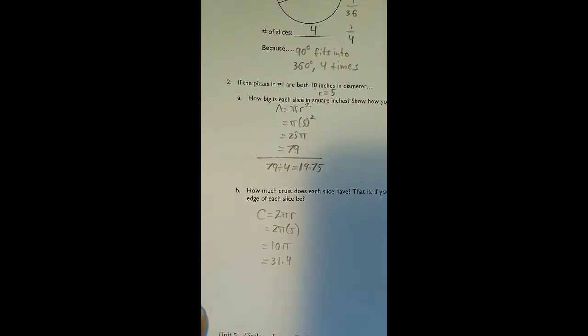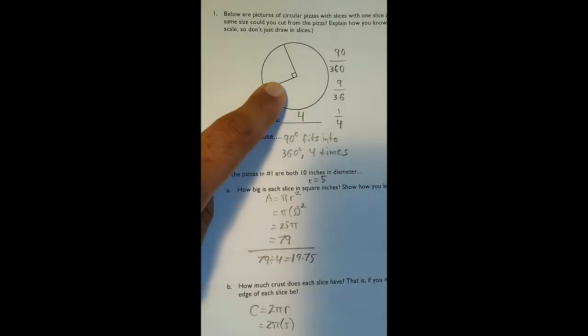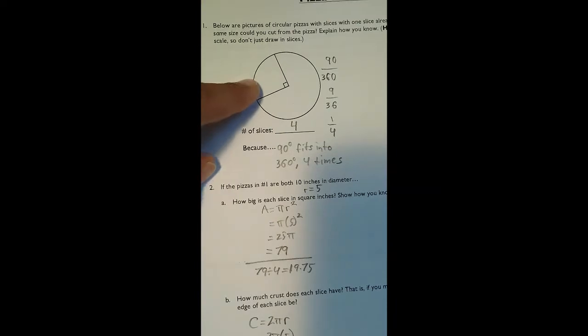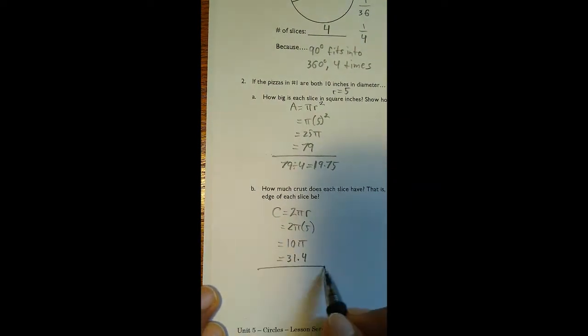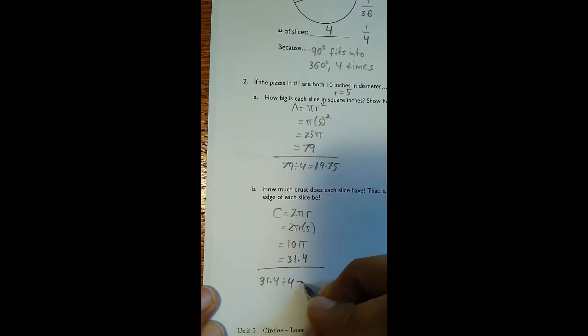Now, what do we determine? We already know that for the first pizza, we're going to have a total of 4 slices. So if we want to know the size of the crust for one of those slices, we take the circumference and divide it by 4. 31.4 divided by 4.